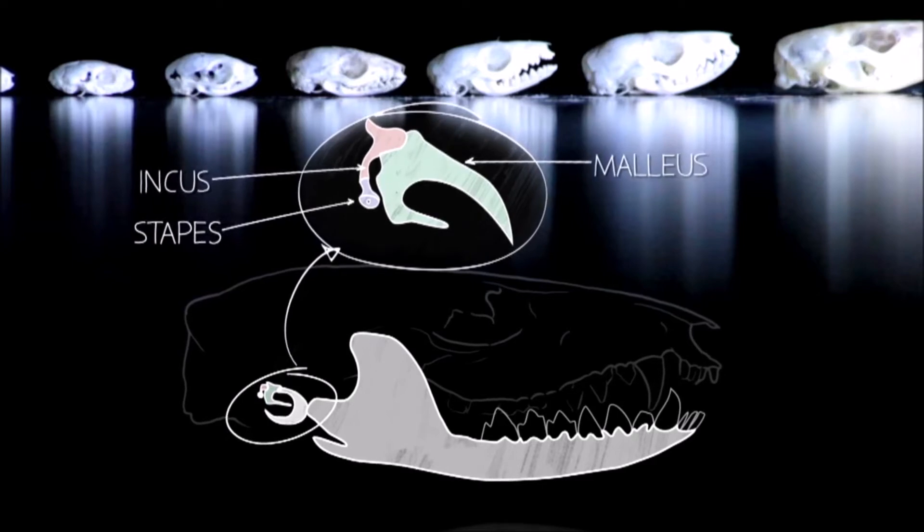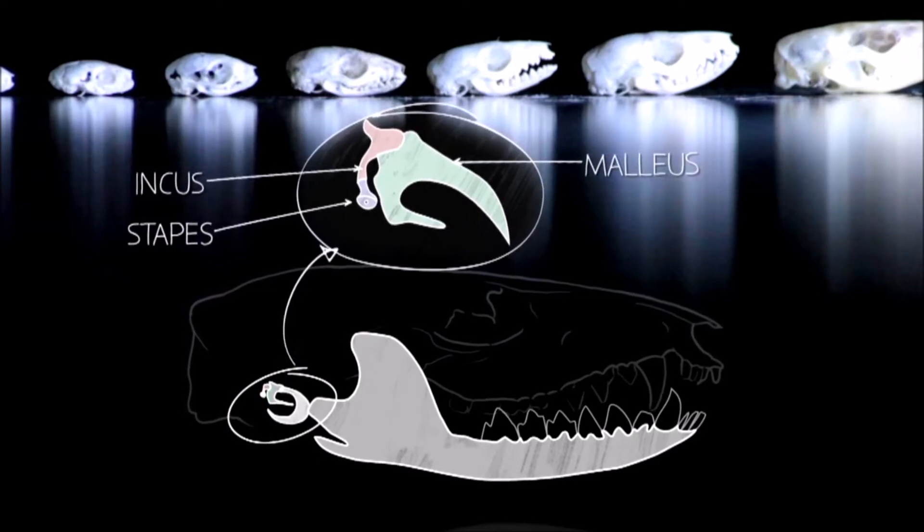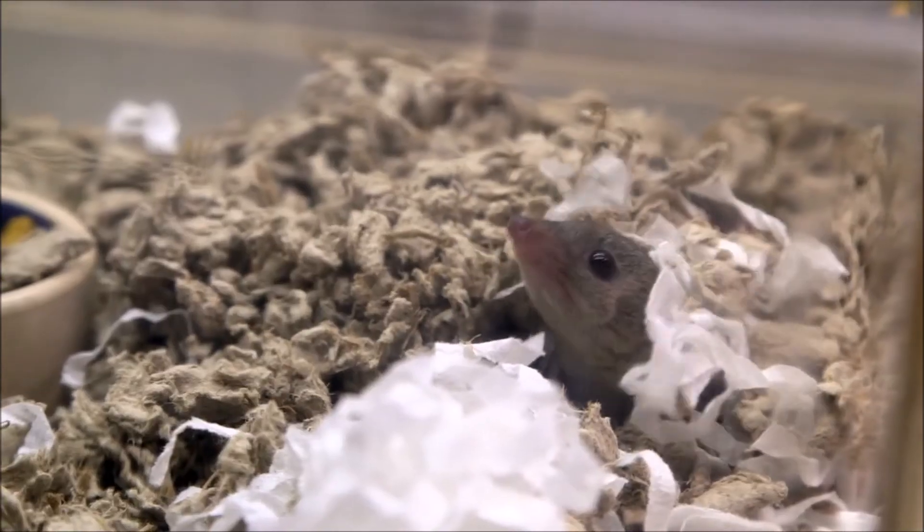If you have modern reptiles with one ear bone, you have modern mammals with three ear bones. The embryos almost provide a link between those two.